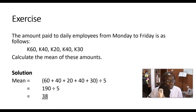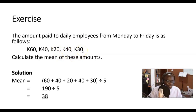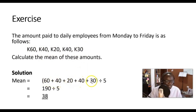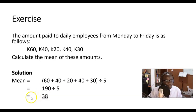Let us look at another exercise. The amounts paid to daily employees from Monday to Friday are: 60, 40, 20, 40, and 30 kwacha. To find the mean: step one, add all the numbers — 60 + 40 + 20 + 40 + 30. Step two, count the values: there are five. The total is 190 divided by 5, and the answer is 38. That is your mean.